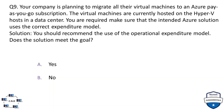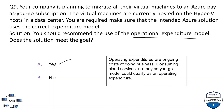Question number nine uses the same scenario. This time the solution is to recommend the Operational Expenditure model. The correct option is yes — we have finally arrived at the correct option. Operating expenditures are the ongoing costs of doing business. Consuming cloud services in a pay-as-you-go model qualifies as an operating expenditure.